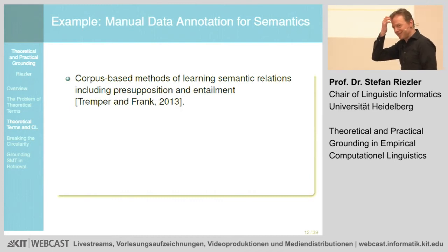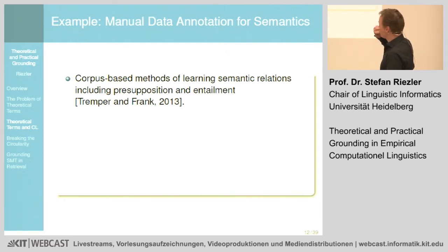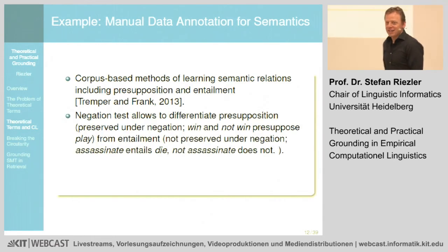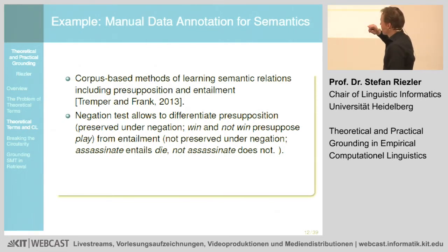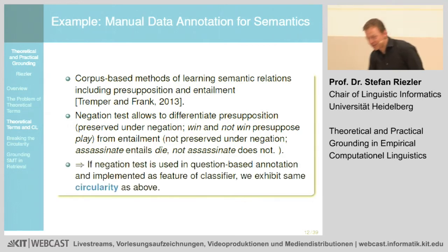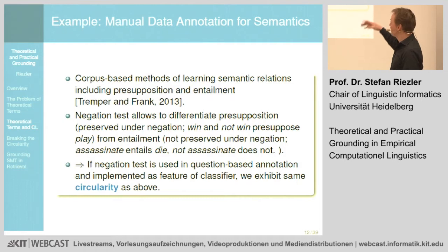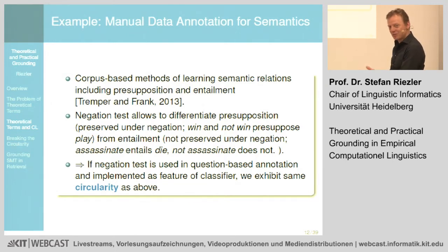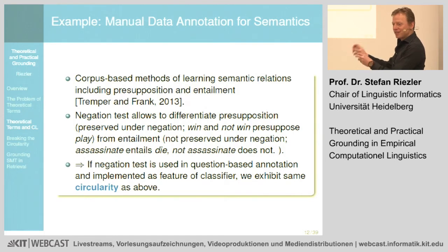Another example in semantics: if you want to learn semantic relations including presupposition and entailment, there are standard linguistic tests like the negation test that allow you to differentiate — presupposition is preserved under negation while entailment is not. You would run into the same circularity problem if you told annotators to use the negation test to annotate the distinction between entailment and presupposition, and simultaneously created a feature that automatically detects negation to train a classifier distinguishing the two.